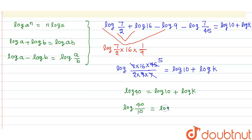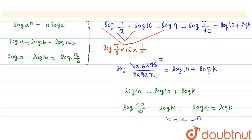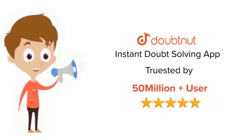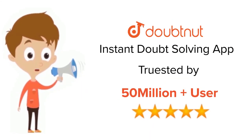Therefore log(4) equals log k, which means k equals 4. Thank you. For class 6 to 12, IIT JEE, and NEET level — trusted by more than 5 crore students — download DoubtNet today.